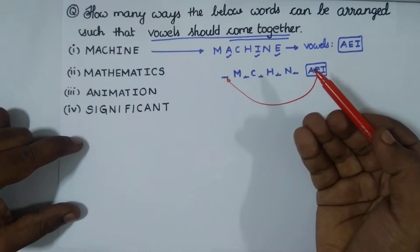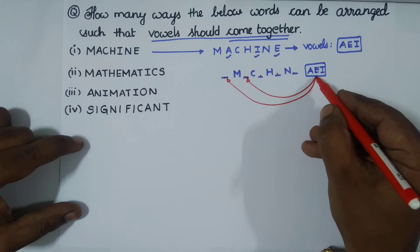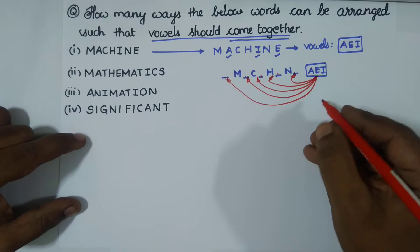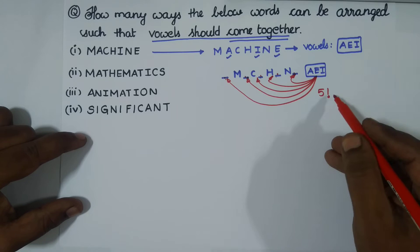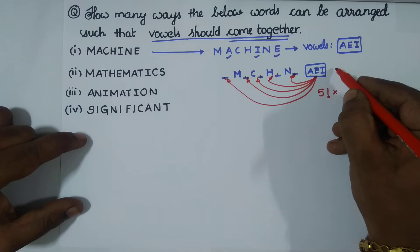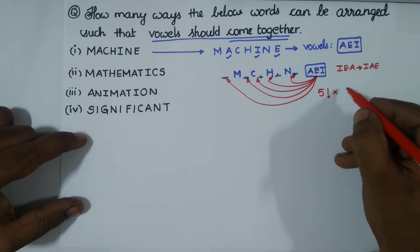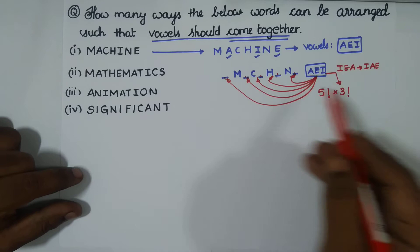For example: A, E, I, M, C, H, N — or M, A, E, I, C, H, N — or M, C, A, E, I, H, N, and so on. As we have five blanks, we take five factorial. The vowel group A, E, I can also be arranged internally — I, E, A or I, A, E and so on — so we also take three factorial for the vowel group.